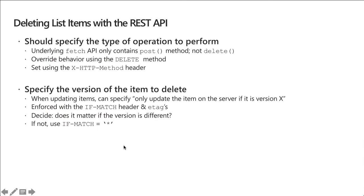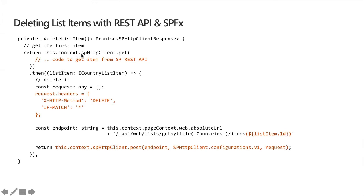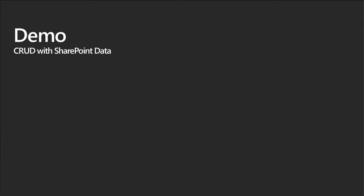A delete is very similar to an update — we don't have a delete HTTP verb available through the Fetch API, so again I have to set the X-HTTP-Method to 'delete' in the headers. The if-match header for a delete can be set to a star ('*') since when deleting you typically don't care what the version number is. I get a reference to the item, set X-HTTP-Method to 'delete' and if-match to '*', then issue a POST to that endpoint. Let's jump to the demo to see creating, updating, and deleting items with the SharePoint REST API.